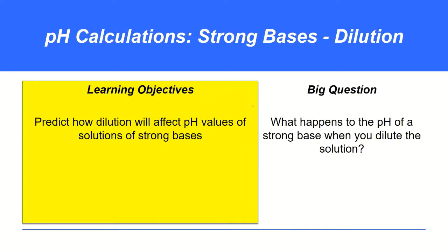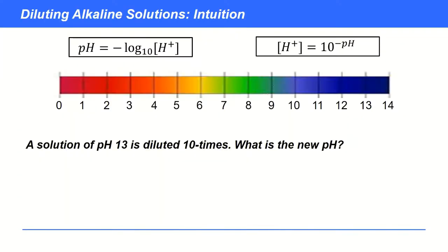Welcome to this video on pH calculations. In this video we're going to be looking at the effect of diluting solutions containing strong bases — alkalis like sodium and potassium hydroxide. Let's begin just thinking intuitively. Imagine we have a solution of pH 13, so it's a strongly alkaline pH. What's going to happen if we dilute that solution 10 times?